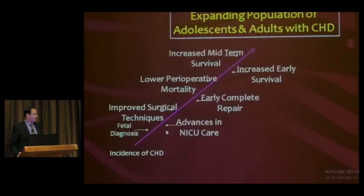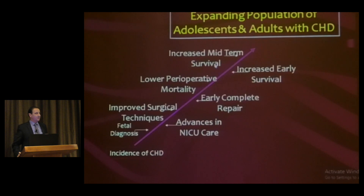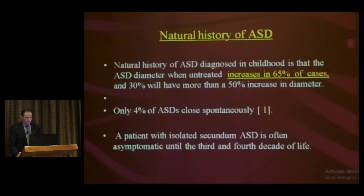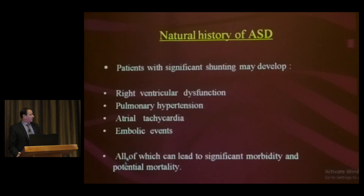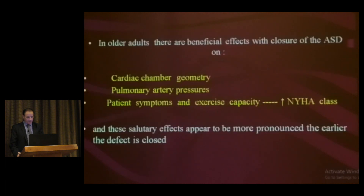Advanced neonatal intensive care, improved surgical technique, early complete repair, and lower perioperative mortality have resulted in increased early and mid-term survival. We are now facing adolescents and adults with congenital heart defects. Natural history shows that when untreated, about 65% of cases progress, with only 4% of ASDs closing spontaneously. Significant shunting with large defects may develop right ventricular dysfunction, pulmonary hypertension, atrial tachycardia, and embolic events, leading to significant morbidity and mortality.